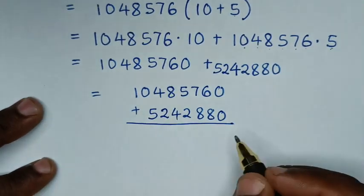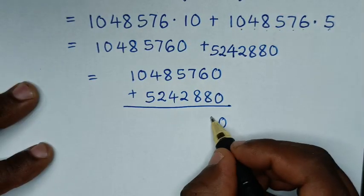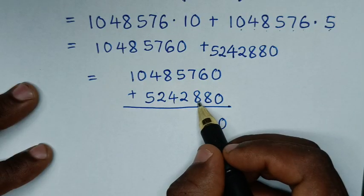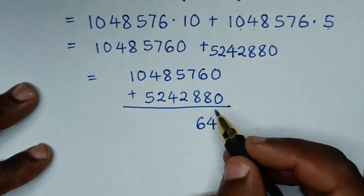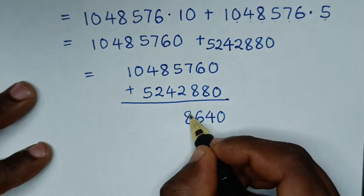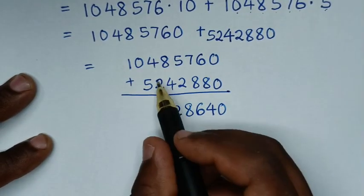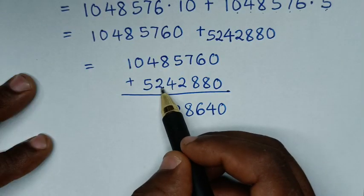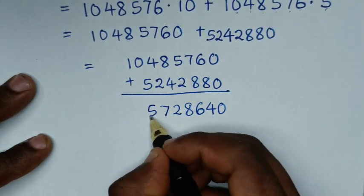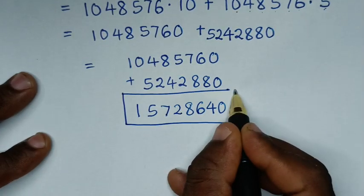So we add these in long form: 10,485,760 plus 5,242,880. Adding: 0 plus 0 is 0; 6 plus 8 is 14, carry 1; 7 plus 8 plus 1 is 16, carry 1; 5 plus 8 plus 1 is 14 carry 1... giving our final answer: 15,728,640.